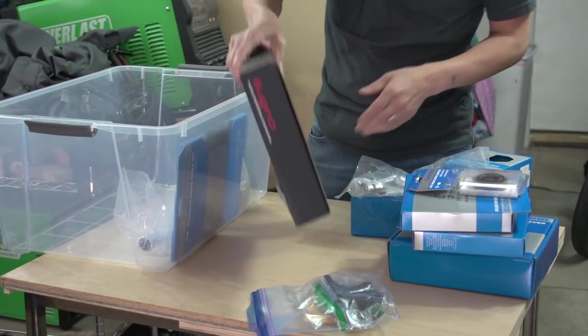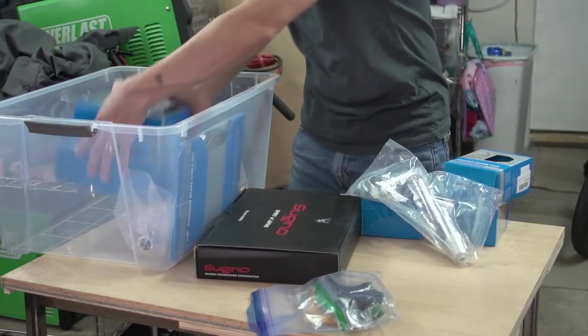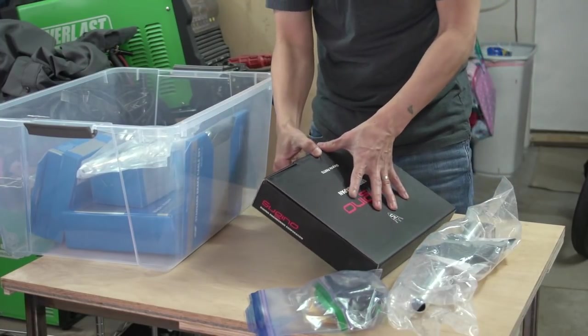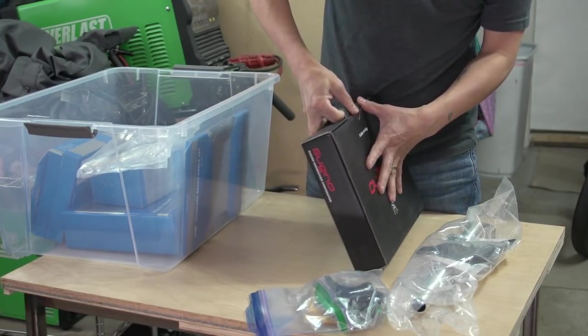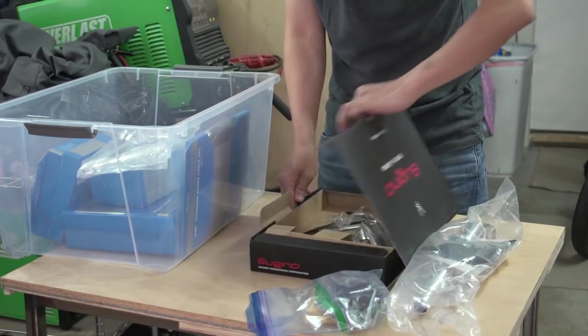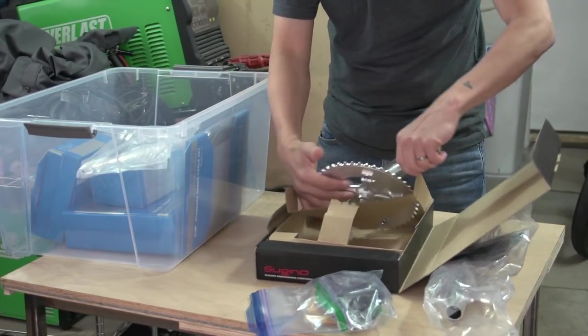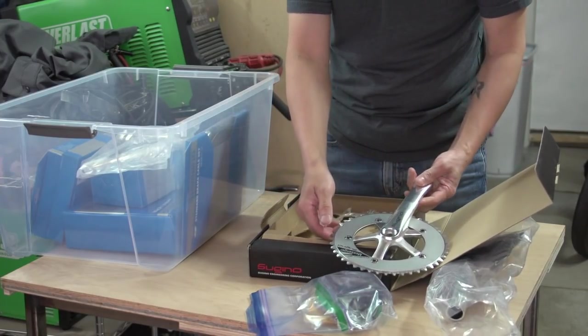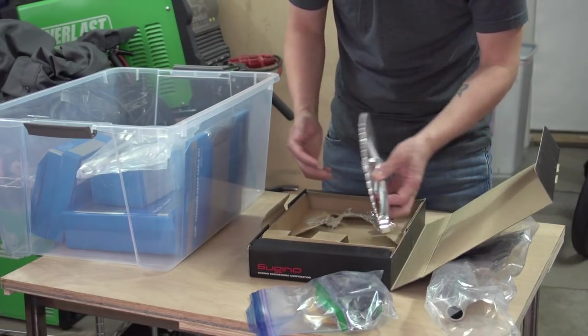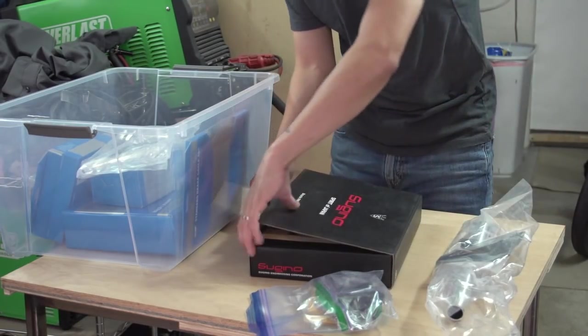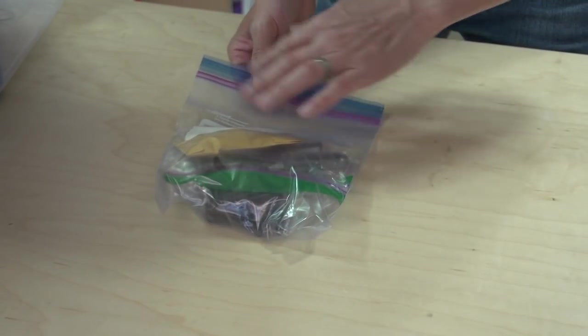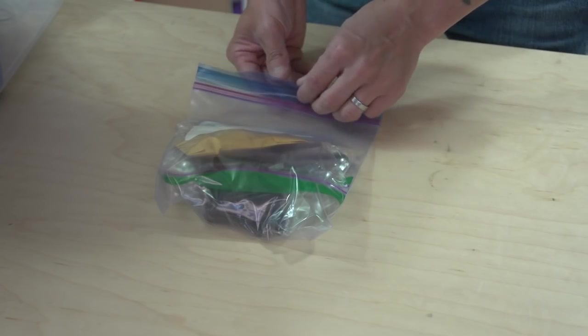Let's see, these are the cranks. I've been buying these for a while, they just work and they're relatively cheap. These are just the Sugino. These are actually kind of hard to find these days - it's a 46-tooth single speed. Let me show you guys the Paragon Machine Works dropouts. It didn't come packaged this way, I just threw it in a bag so I didn't lose the parts.